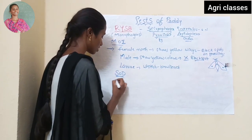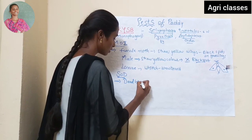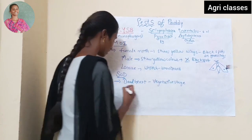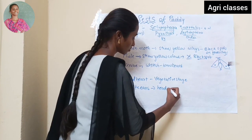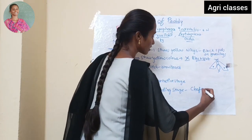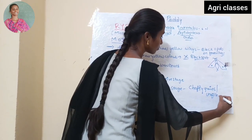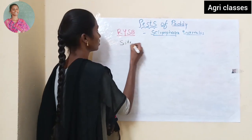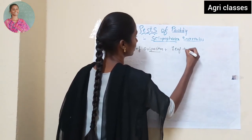The most important thing is symptoms of damage. There are two main symptoms: dead hearts during the vegetative stage, and white ears during the flowering stage. These white ears are also called chaffy grains or unfilled grains.